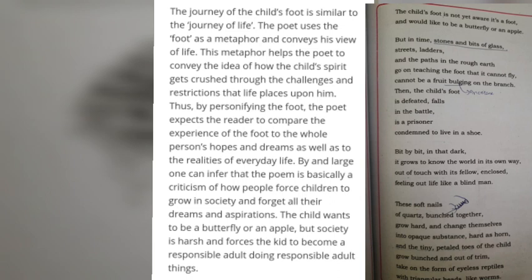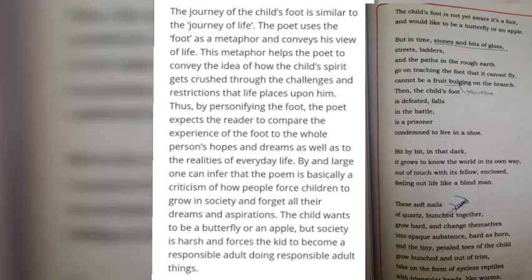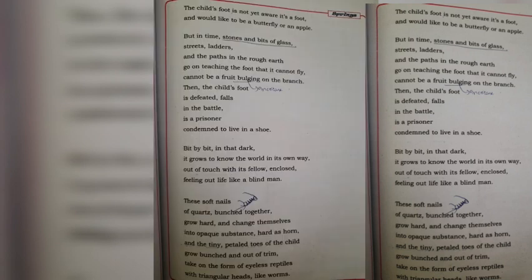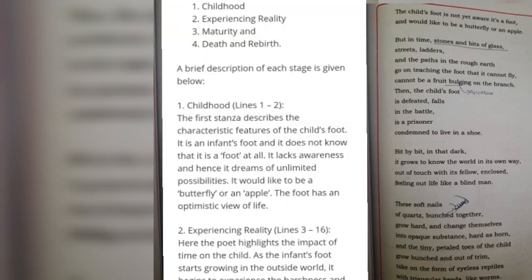The child wants to be a butterfly or an apple, but society is harsh and forces the child to become a responsible adult doing responsible adult things. The transition of the child's foot into an adult foot and then until its death can be studied under four stages: 1. Childhood, 2. Experiencing Reality, 3. Maturity, and 4. Death and Rebirth.